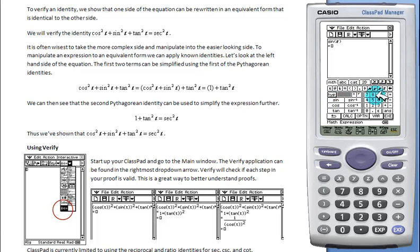Put in sine of t squared, plus cosine of t squared, plus tan of t squared. Hit exe.